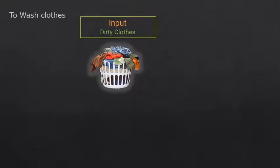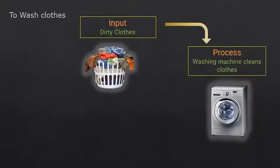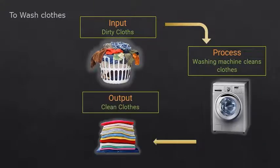Washing clothes: dirty clothes and washing powder are input, the washing machine cleans the dirty clothes is process, and clean clothes is the output.